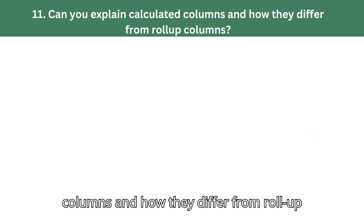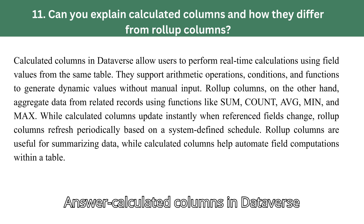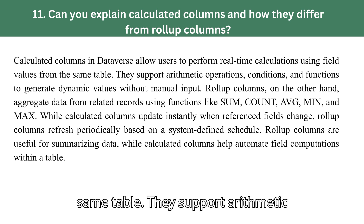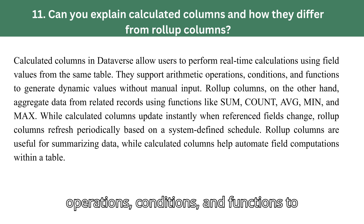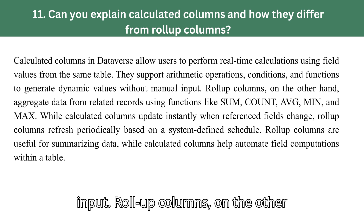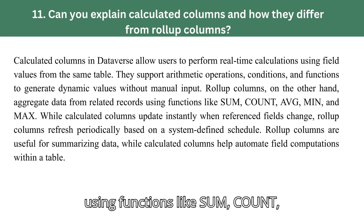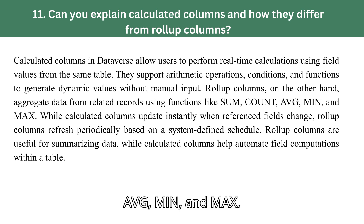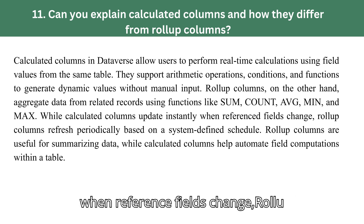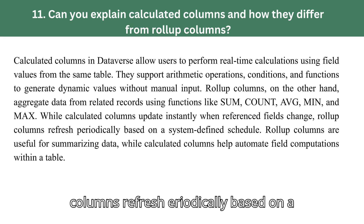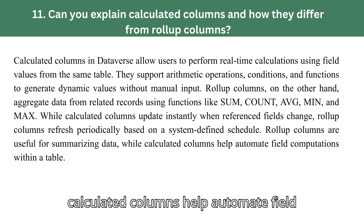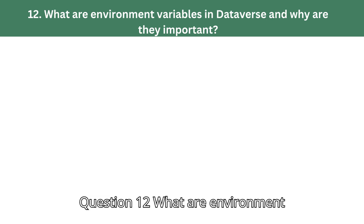Question 11: Can you explain calculated columns and how they differ from roll-up columns? Answer: Calculated columns in Dataverse allow users to perform real-time calculations using field values from the same table. They support arithmetic operations, conditions, and functions to generate dynamic values without manual input. Roll-up columns, on the other hand, aggregate data from related records using functions like SUM, COUNT, AVG, MIN, and MAX. While calculated columns update instantly when reference fields change, roll-up columns refresh periodically based on a system-defined schedule. Roll-up columns are useful for summarizing data, while calculated columns help automate field computations within a table.